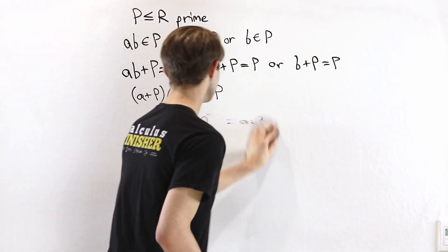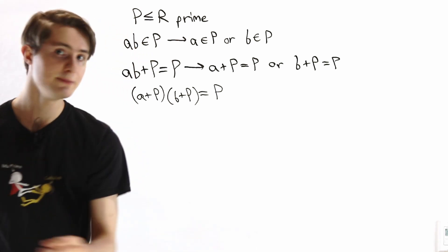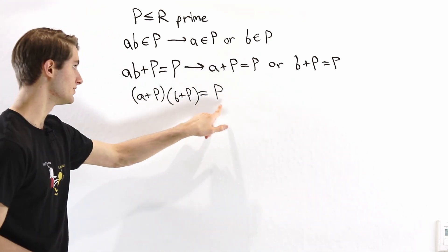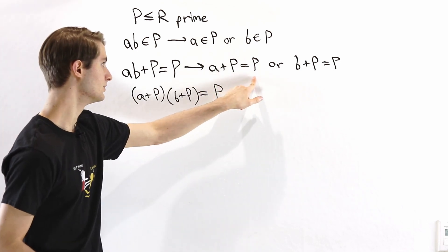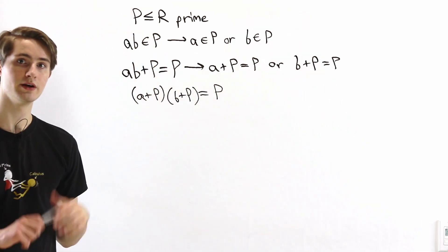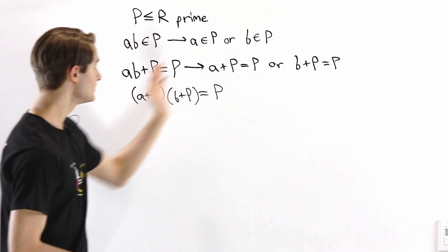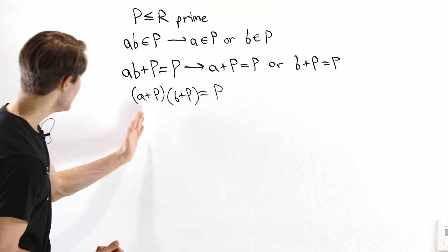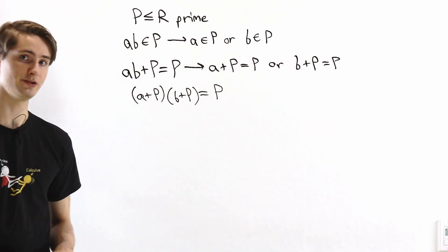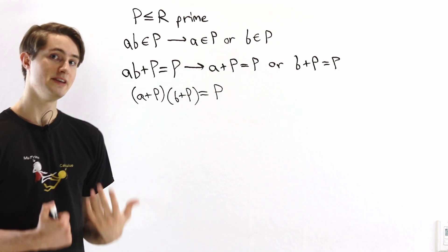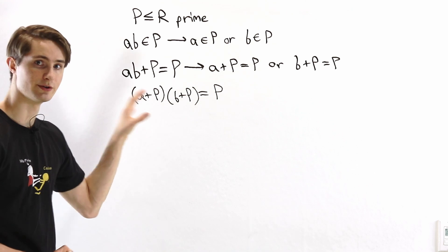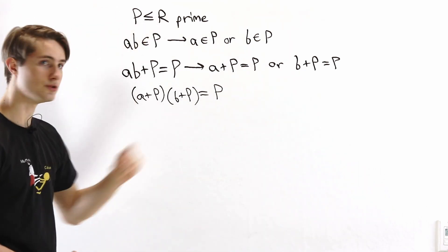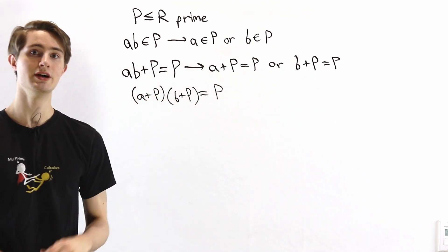In the quotient ring R mod p, the coset p is the zero element — the additive identity. So saying that a + p equals p is really saying that a + p is zero in the quotient ring. This means a product equals zero if and only if one of the factors equals zero — that's exactly the statement of an integral domain. There are no zero divisors, so an ideal is prime if and only if its quotient ring is an integral domain.